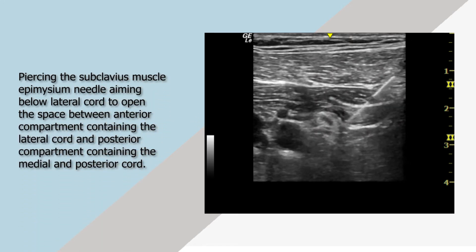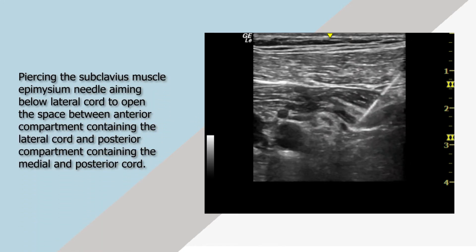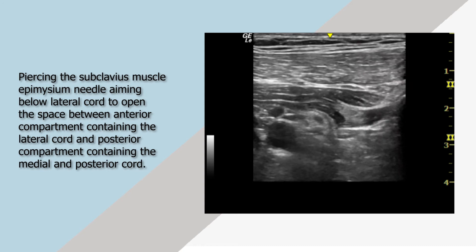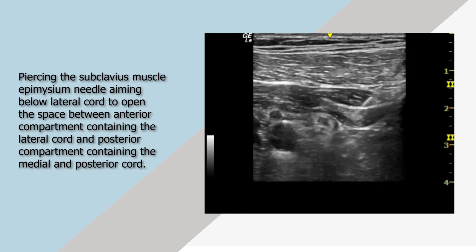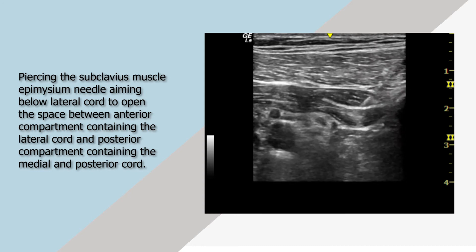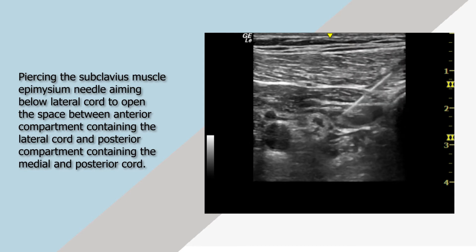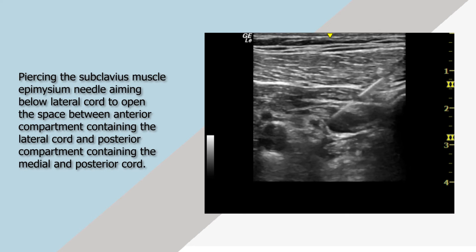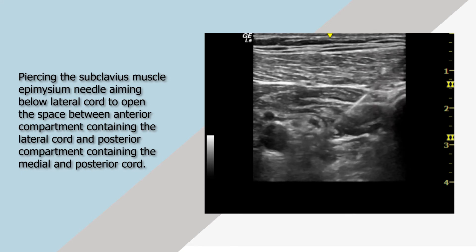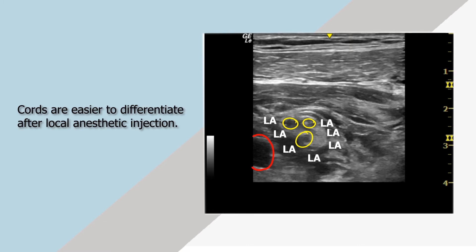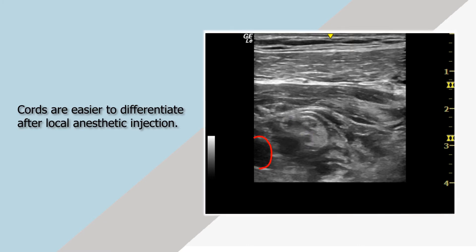Piercing the subclavius muscle epimysium, the needle aims below the lateral cord to open the space between the anterior compartment containing the lateral cord and the posterior compartment containing the medial and posterior cord. Cords are easier to differentiate after local anesthetic injection.